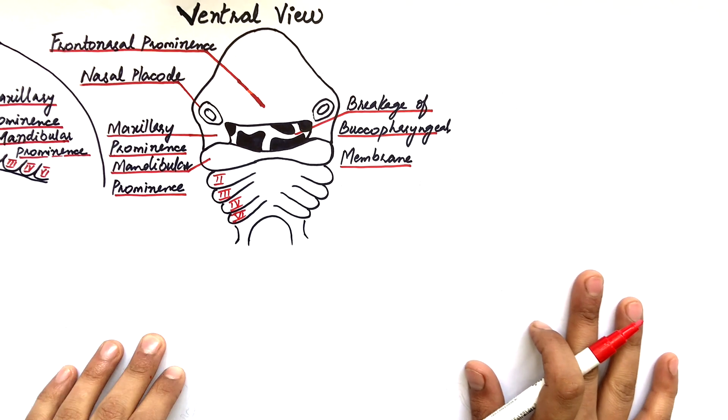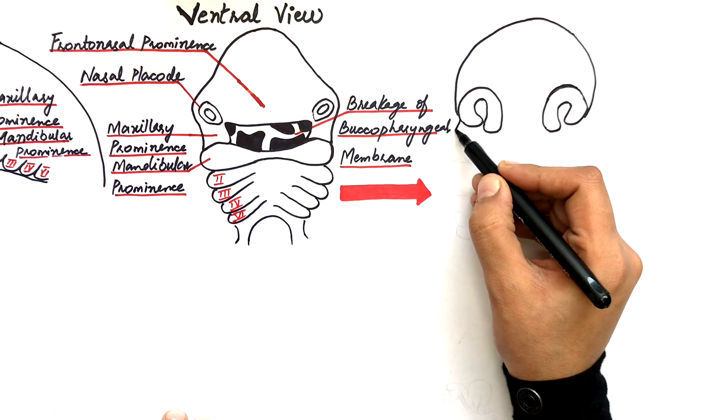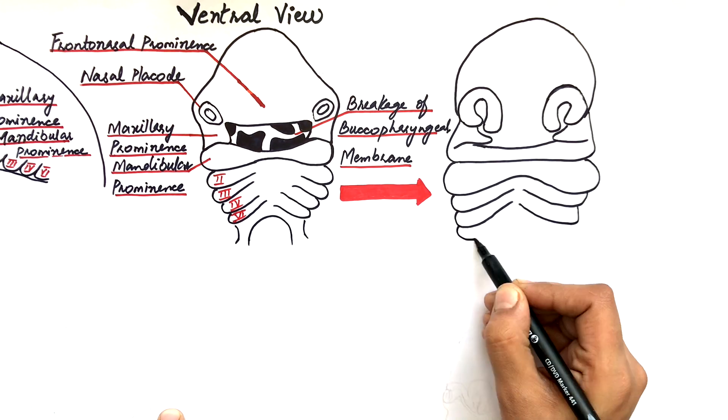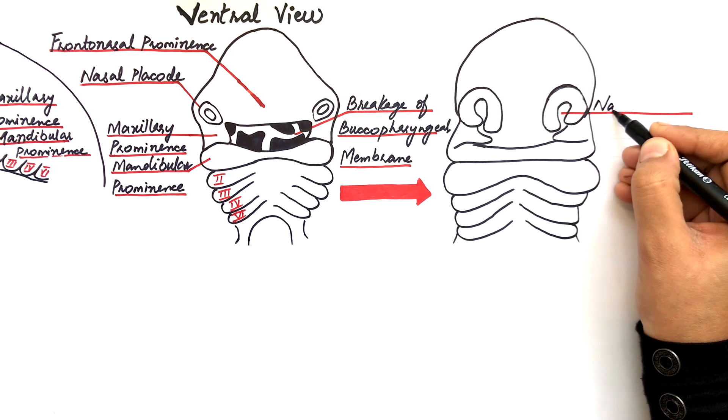As the embryo enters into its fifth week, the underlying ectomesenchyme surrounding these placodes rapidly proliferates and produces a ridge surrounding these placodes. This converts the nasal placodes into the nasal pits.